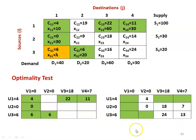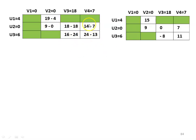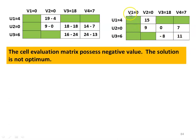We subtract the UV values of the unallotted cells from the original cost matrix: 19−4=15, 9−0=9, 18−18=0, 14−7=7, 16−24=−8, 24−13=11. This last matrix is called the cell evaluation matrix. Since it contains a negative value (−8), the solution is not optimum and we must iterate towards the optimum solution.